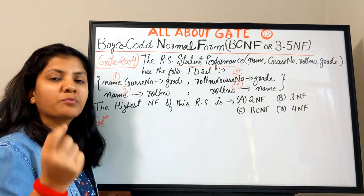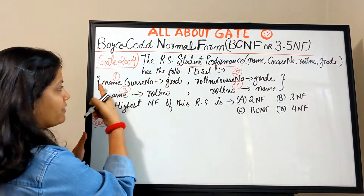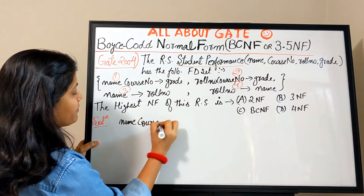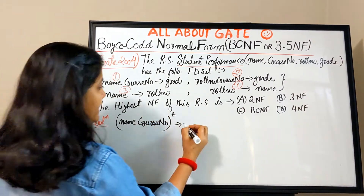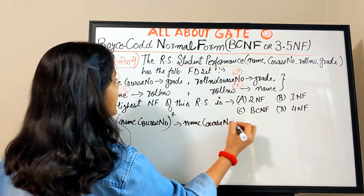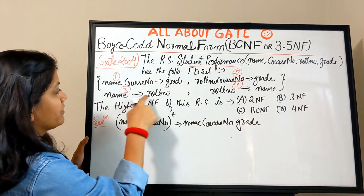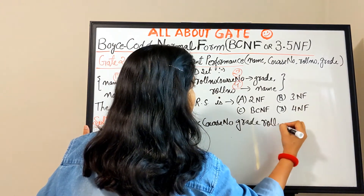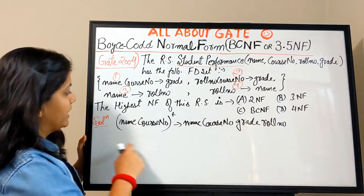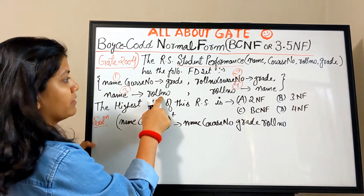Let's find the candidate key. Start with the determinant of the first functional dependency: take Name and CourseNumber and find its closure. Name, CourseNumber determines itself, and also determines Grade. Since Name determines RollNumber, we also get RollNumber. So all four attributes are determined — Name+CourseNumber is a key. Can we break it down? Name alone gives only Name and RollNumber, and CourseNumber alone gives only CourseNumber.